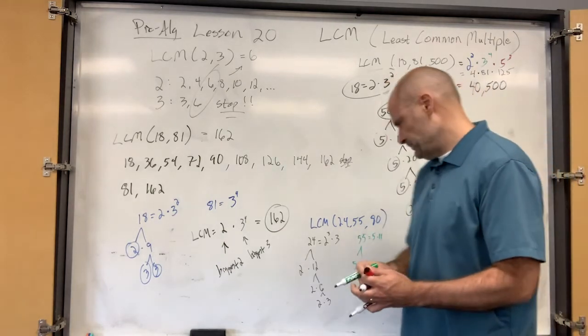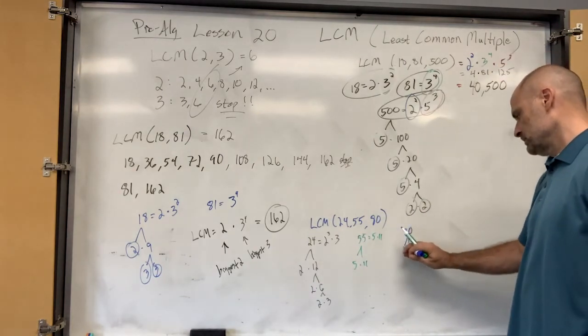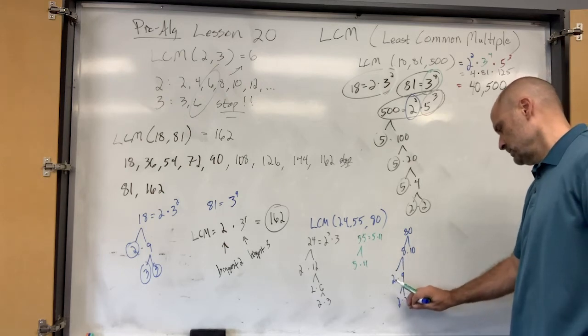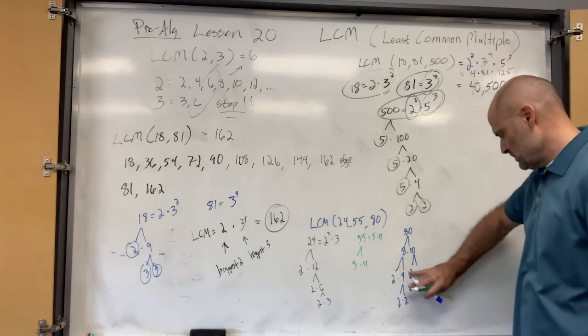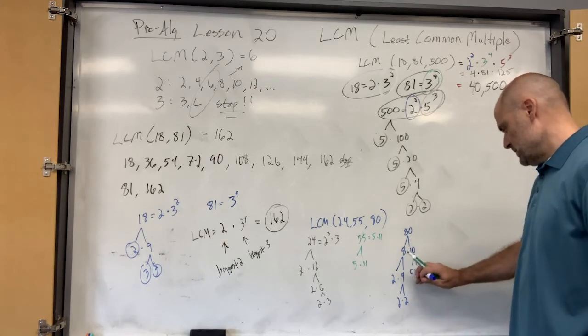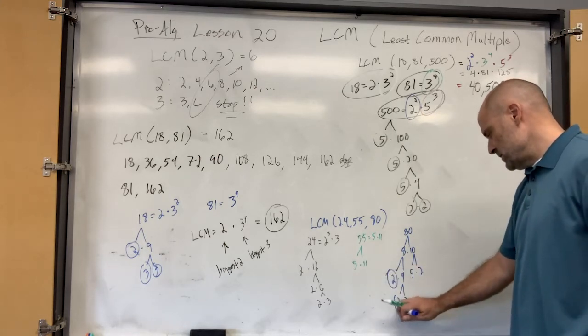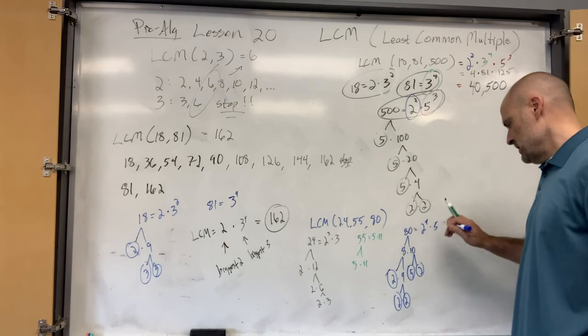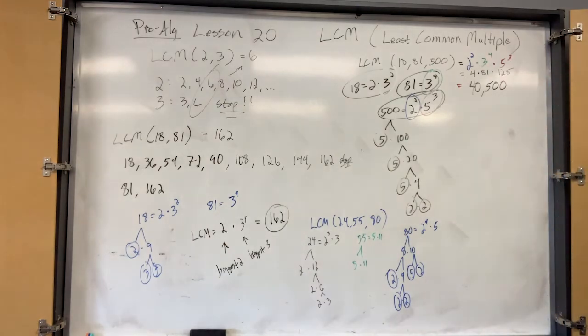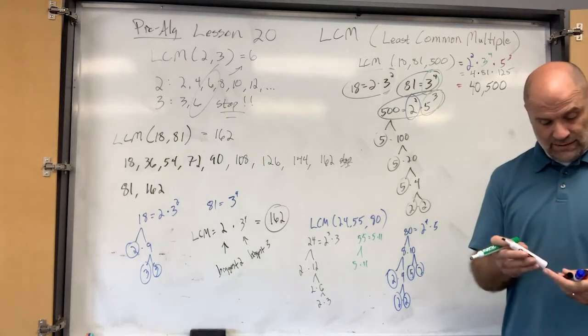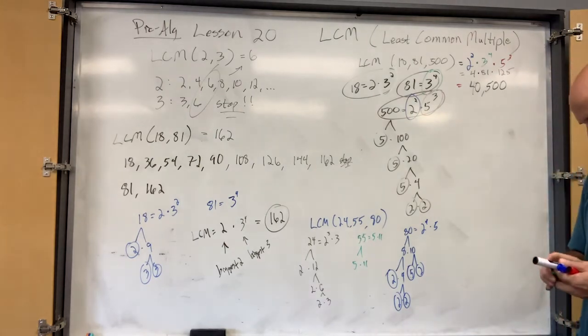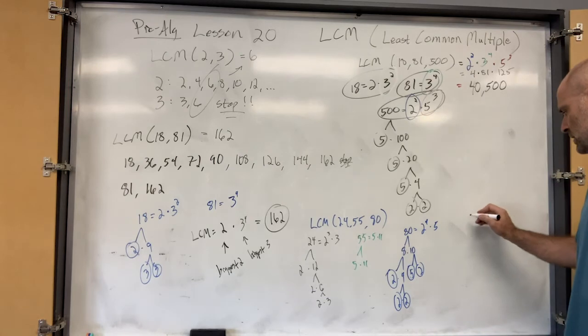What about eighty? Eight times ten, which equals two times four, which is two times two, and then five times two. Okay, so you get one, two, three, four twos, so two to the fourth, and then a five. Okay, so the least common multiple, how do you figure out the least common multiple? You take the biggest number. All right, so let's start with the smallest number.